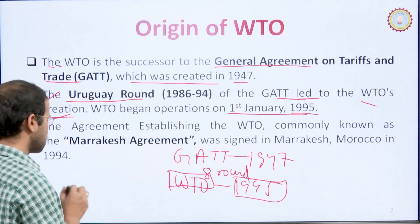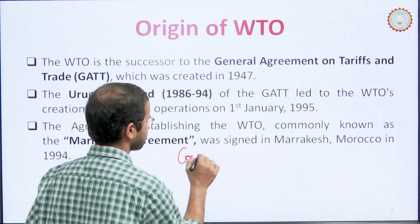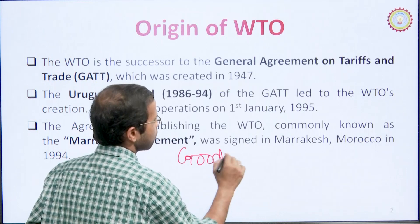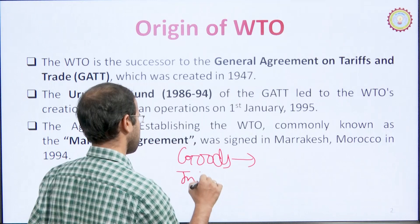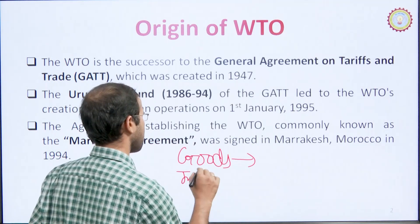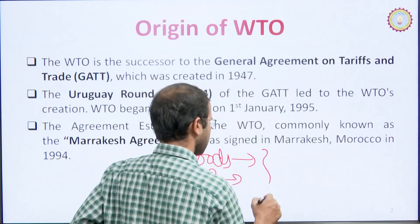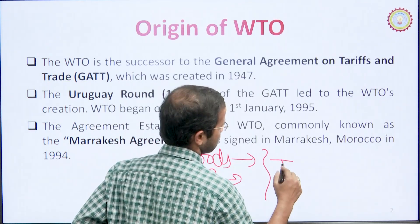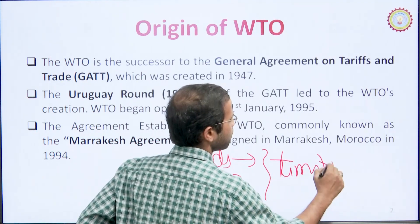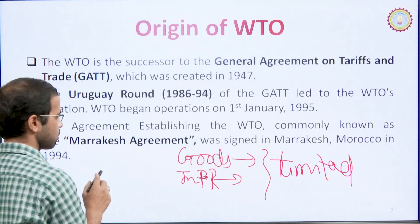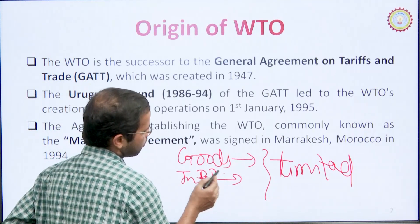Basically, the original GATT applied only to goods. There was a limitation — intellectual property rights (IPR) were not covered, and the implementation was limited. So these areas needed to be improved and added.